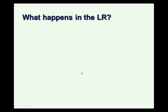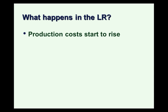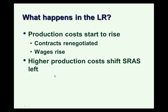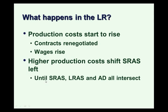In the long run, what forces could move us to correct an inflationary gap? In the long run, production costs will start to rise. There's upward pressure on prices, a shortage of labor that pushes wages up, shortages of other materials, rising energy prices, and contracts being renegotiated. When those costs rise, higher production costs shift the supply curve to the left. The short run aggregate supply curve shifts left as we strain capacity and push production costs higher. This process continues until short run aggregate supply, long run aggregate supply, and aggregate demand all intersect — until we reach a long run equilibrium.